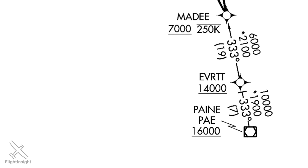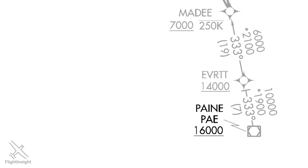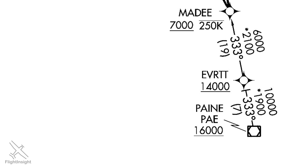Let's look at an arrival that pretty much any newly minted IFR pilot could theoretically fly — the MADI-4 arrival into Bellingham, Washington. The first fix is the Payne VOR, which we should cross no lower than 16,000 feet. Some single-engine piston aircraft like a Cirrus or Diamond should be able to make this altitude. The next fix is the Everett intersection at or above 14,000 feet. Next is the MADI intersection, no lower than 7,000 feet and no faster than 250 knots — with no minimum speed, good news for single-engine piston planes. If faster aircraft were on this arrival behind us, ATC might break us off, but otherwise there's no reason we can't fly it.